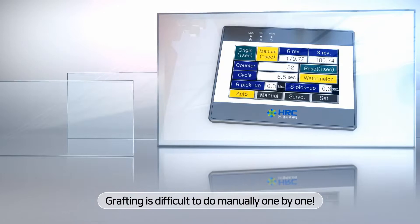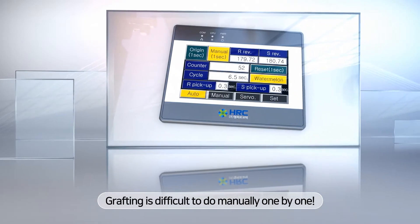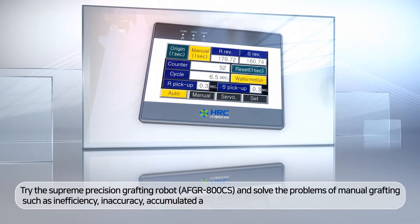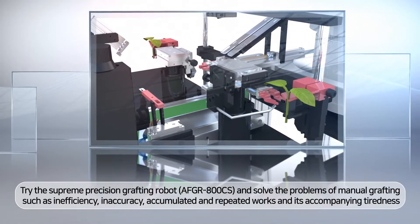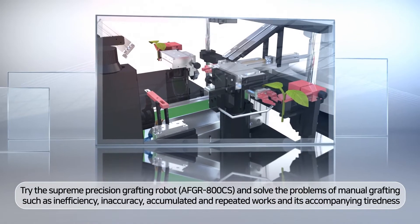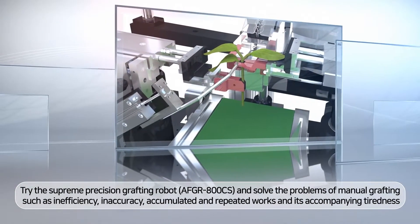But now, one single button can solve all of these problems. Try the Supreme Precision Grafting Robot and solve the key problems of manual grafting such as inefficiency, inaccuracy, and the exhaustion that repetition creates.